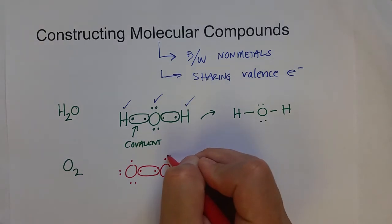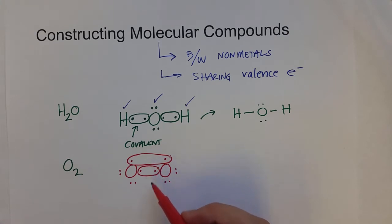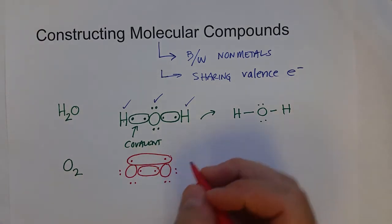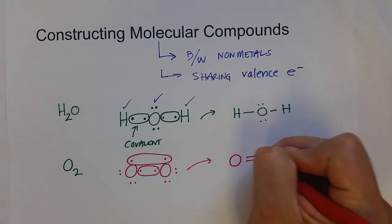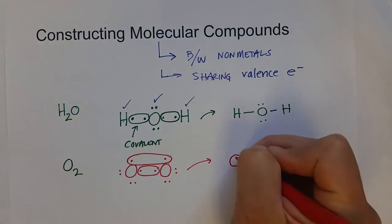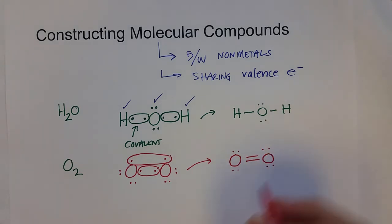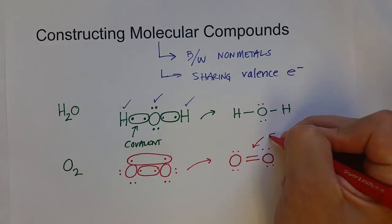It will actually form a double covalent bond or share two pairs of electrons between the two oxygen atoms. So when we write the oxygen molecule O2, we write it with two lines in between, and that is a covalent double bond.